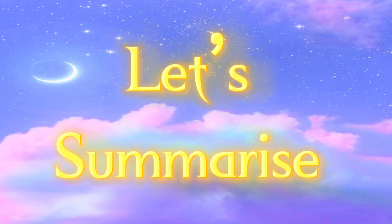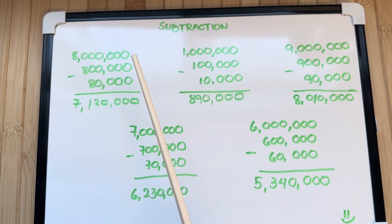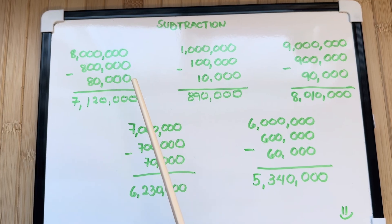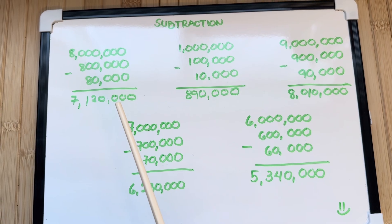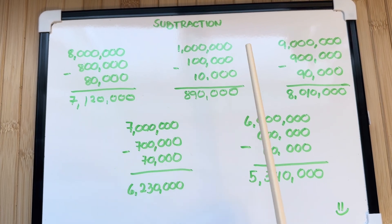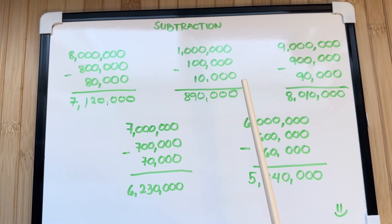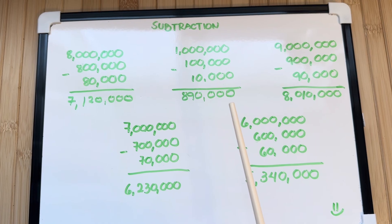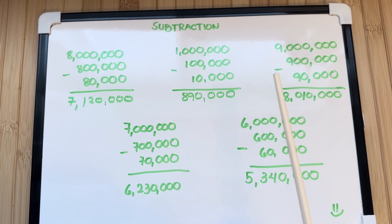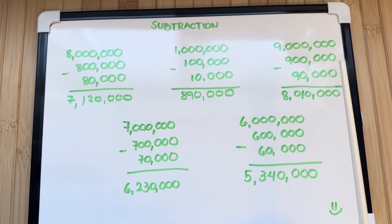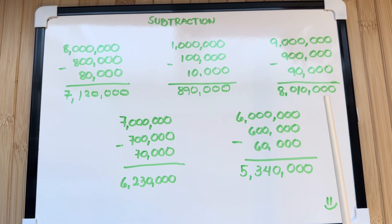Let's summarize. Let's learn subtraction. 8,000,000 minus 800,000 minus 80,000 is equals to 7,120,000. Next, 1,000,000 minus 100,000 minus 10,000 is equals to 890,000. Next, 9,000,000 minus 900,000 minus 90,000 is equals to 8,010,000.